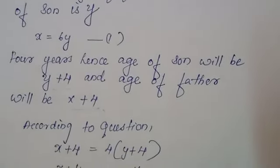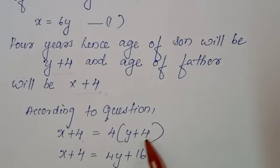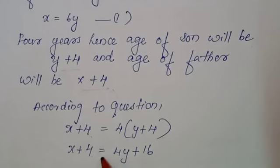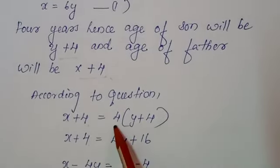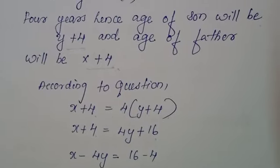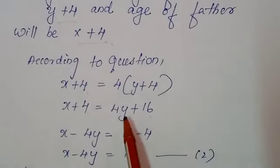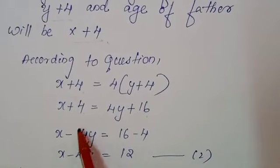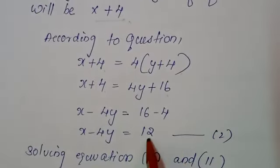4 years hence the age of son will be Y plus 4 and the age of father will be X plus 4. Then, according to the conditions, X plus 4 that is age of father equals 4 times, 4 into Y plus 4, 4 years. That means 4 into Y plus 4. So, X plus 4 equals, apply here, distributive property of multiplication over addition. 4 into Y, 4Y plus 4 into 4 that is 16. So, we should rearrange it. As we all know how to solve linear equations, we should transport the variables to LHS side and constant numbers to RHS side. So, X minus 4Y equals 16 minus 4 that is 12.